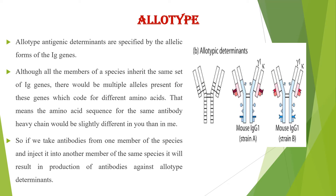What is allotype? Allotype is a type of antigenic determinant defined by the allelic form of the IgG. Although all members of the species inherit the same set of IgG genes, there would be multiple alleles for the same gene. If you take the antibody from one member of a species and inject it into another member of the same species, it will result in the production of antibodies against the allotypic determinant.